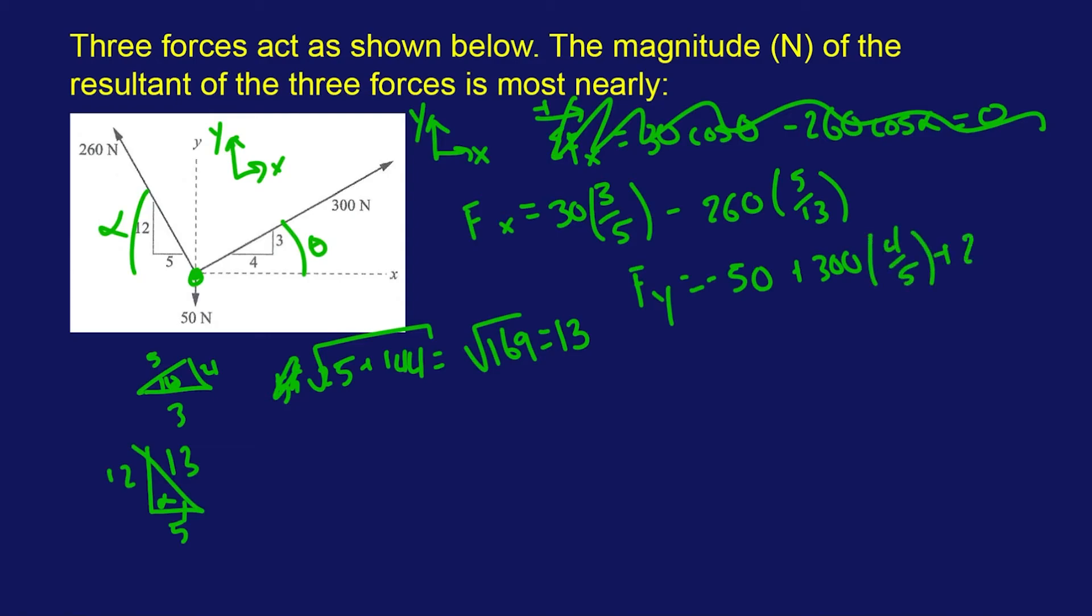And then we're going to add 260 sine of alpha, which is opposite over hypotenuse, which is 12 over 13. Boo-ba-bing! And then all you gotta do is plug that into your calculator to get the components.